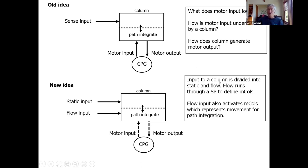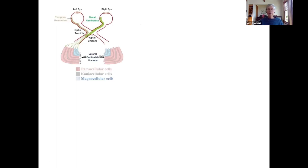I argued that sensory input into a column is divided into static and flow portions. When we run the flow bits through a spatial pooler-like thing, we define mini columns that represent movement vectors, the basis of movement vectors that the system can behave. That's the beginning of the path integration modeling system.